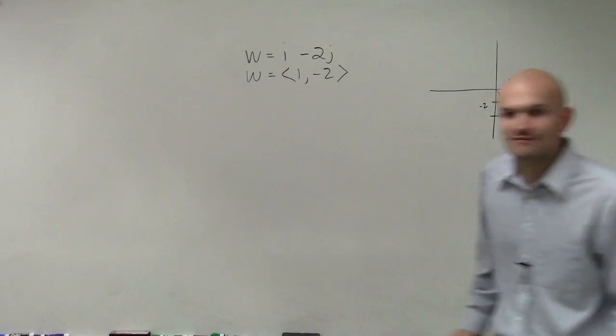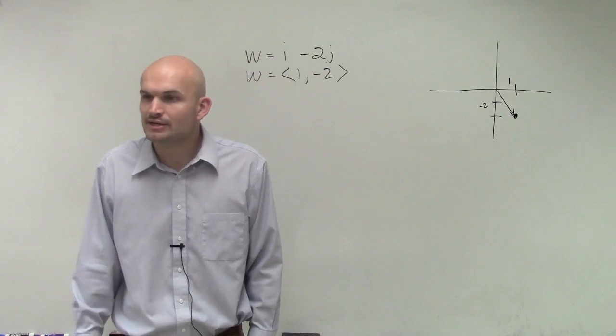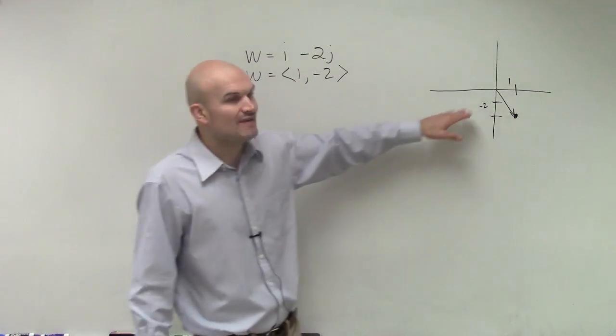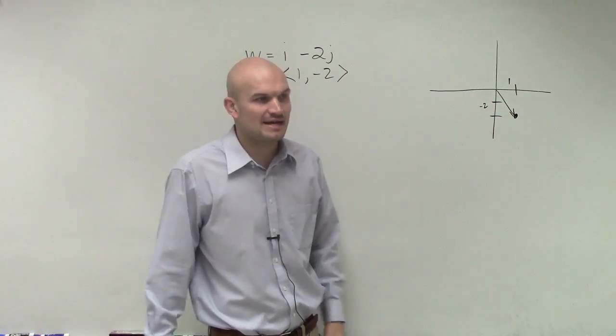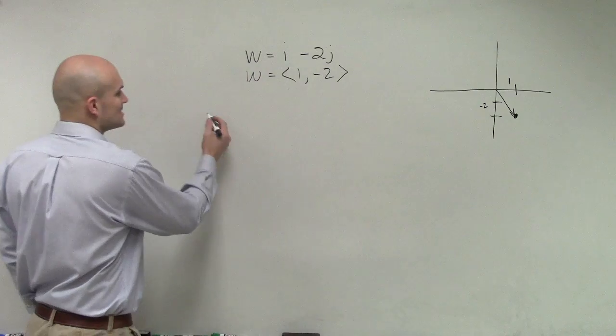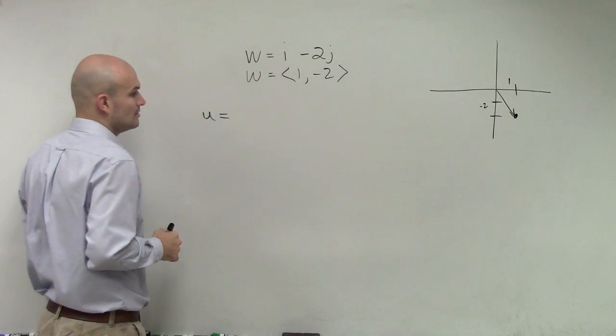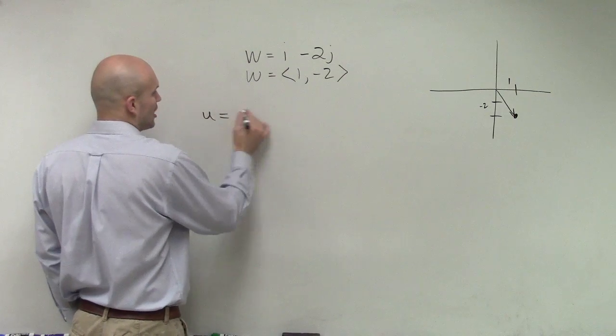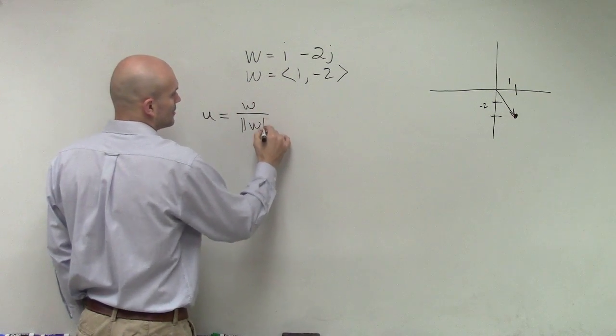Now since you went down negative 2, is the magnitude of that vector 1? No, right? So what we need to do is we need to find the unit vector that's going to still have the same direction of this, but then have a magnitude of 1. So to do that, we say unit vector is going to equal our vector w over the magnitude of w. And that is your definition of your unit vector.